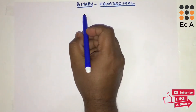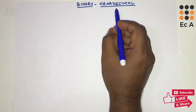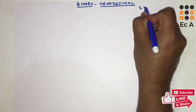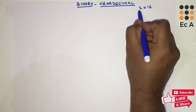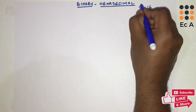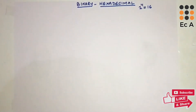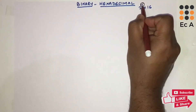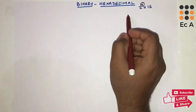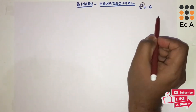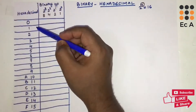Welcome to Easy Academy. In this lecture we'll understand the conversion between binary and hexadecimal number systems. The base of binary is 2 and the base of hexadecimal is 16. Since 2 to the power of 4 equals 16, a single hexadecimal digit can be converted to an equivalent 4-bit binary number, and we require 4-bit binary groups to convert to hexadecimal.